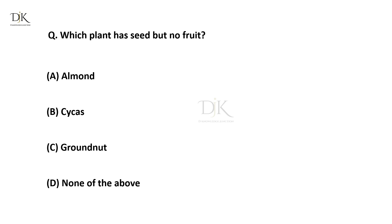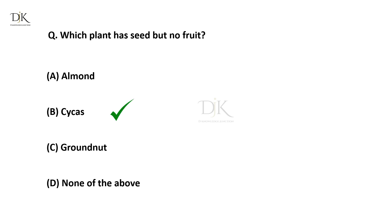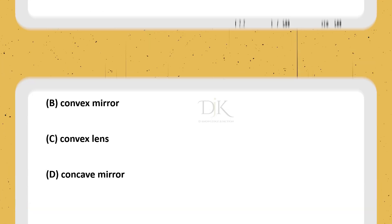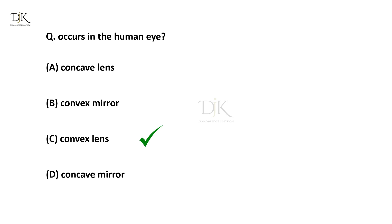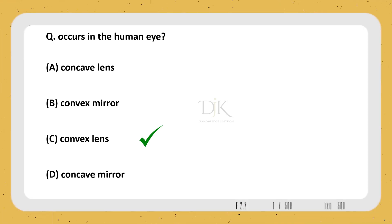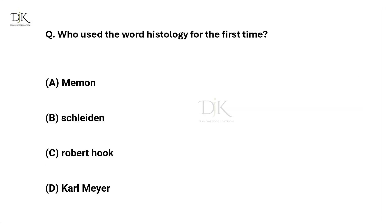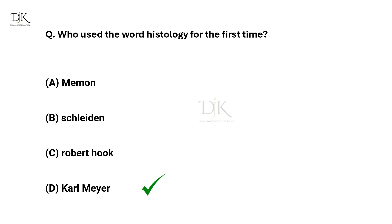Which plant has seed but no fruit? The right answer is Cycas. What occurs in the human eye? The right answer is Convex lens. Who used the word histology for the first time? The right answer is Carl Mayer.